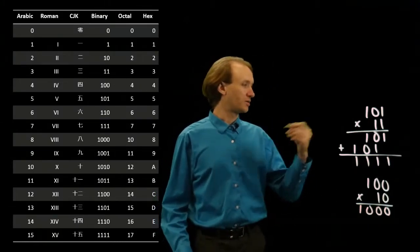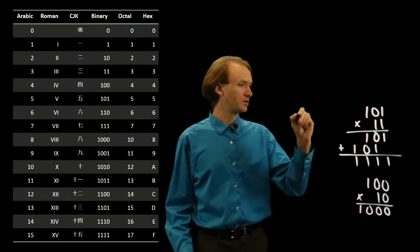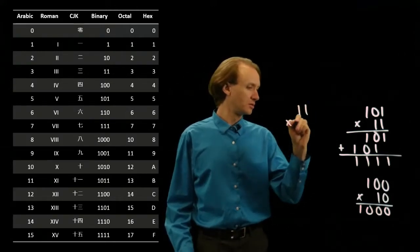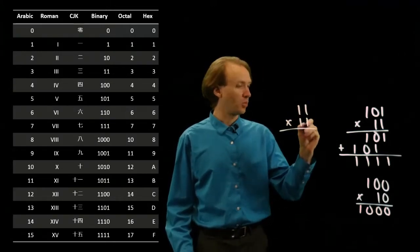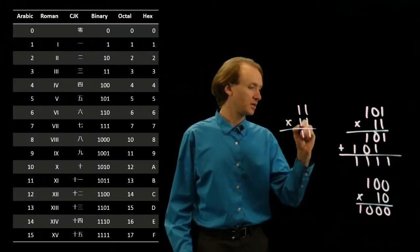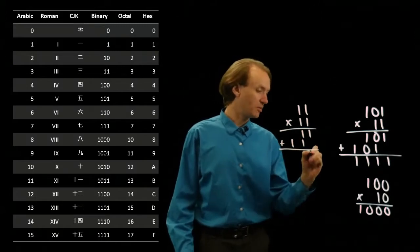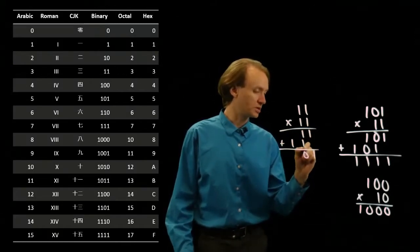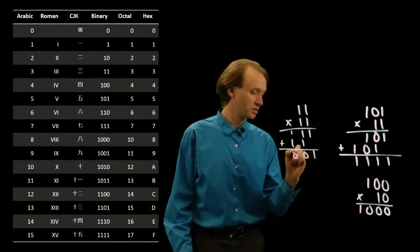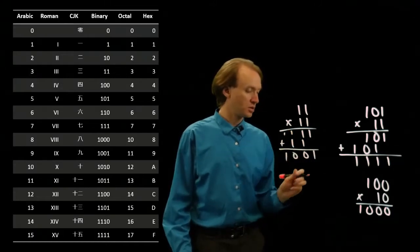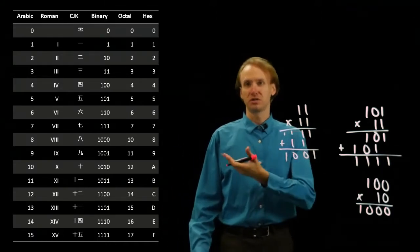If I do something like 3 times 3, 1 times anything is the anything, and then 1 times anything is the anything. Now I'll add these up. 1 plus 1 is 10. So I get 1,001, which is 9 in binary.